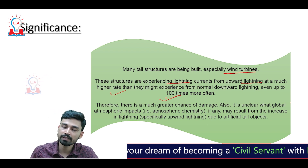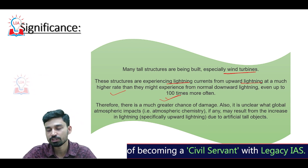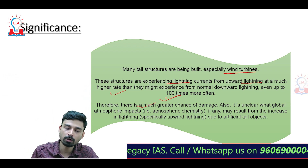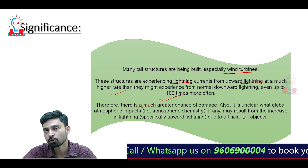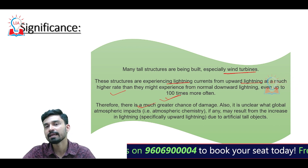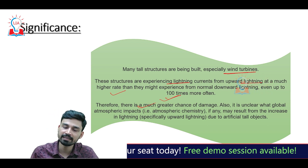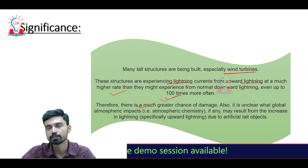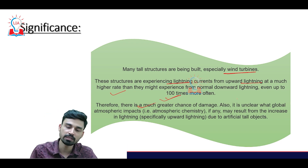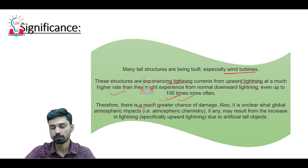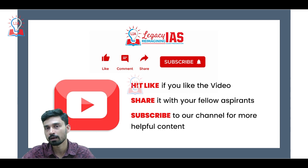Due to this, there is a higher chance of damage to these structures. Scientists also believe it is not yet fully clear how upward lightning impacts the global atmosphere, or precisely the atmospheric chemistry and composition. It may result from the increase in upward lightning due to artificial tall objects. In the next 30, 50, or 100 years, as we build more and more tall structures, it will be interesting to see whether these are significant enough to cause appreciable changes in atmospheric chemistry.